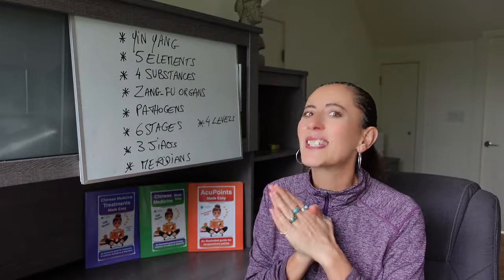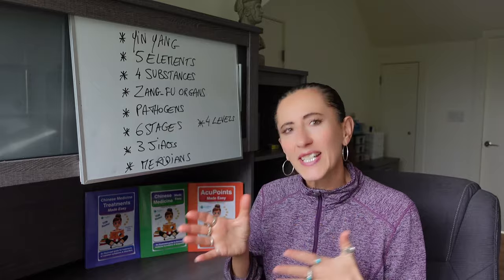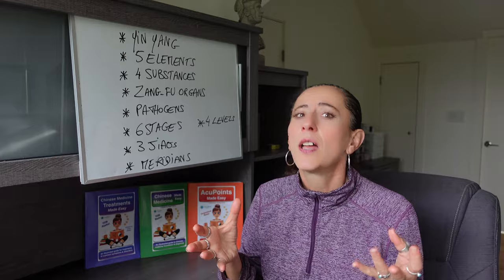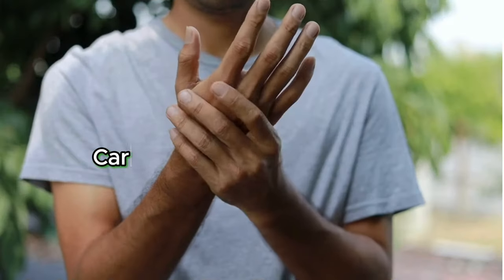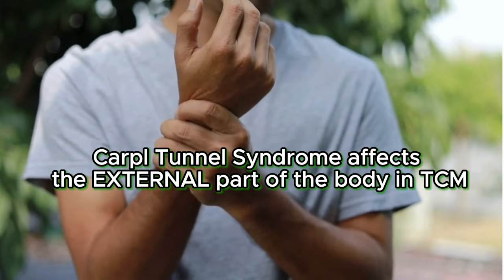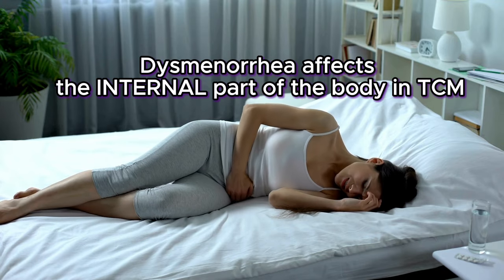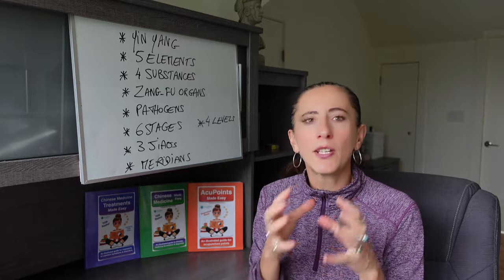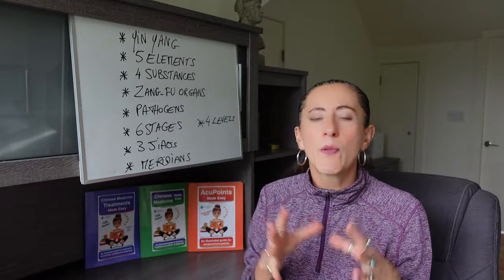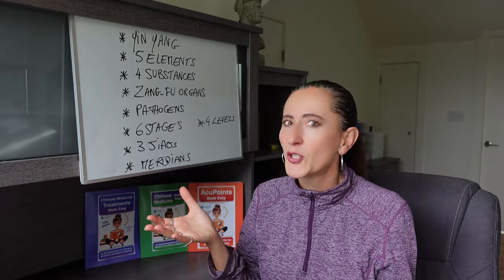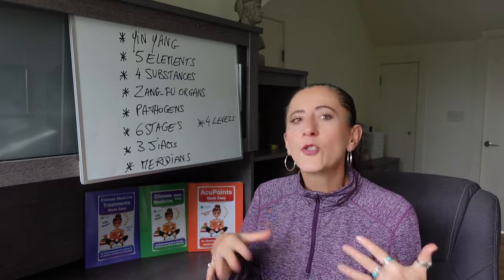Start first with internal versus external. Internal is going to affect all the organs, the brain, the reproductive system, while external affects the musculoskeletal system — bones, muscles, joints, ligaments, tendons, and skin. So if someone comes in with carpal tunnel syndrome, that's more external, even if it's a chronic issue. Someone with menstruation pain like dysmenorrhea — that's internal. You decide what the chief complaint is about, since you want to address that first. Insomnia is usually internal; sciatica is usually external.